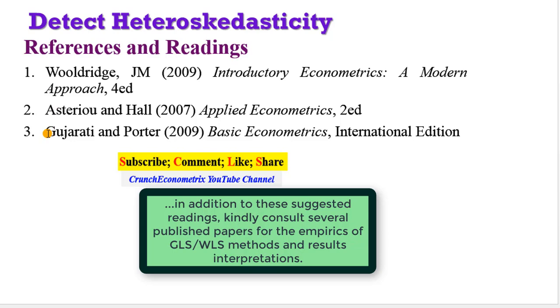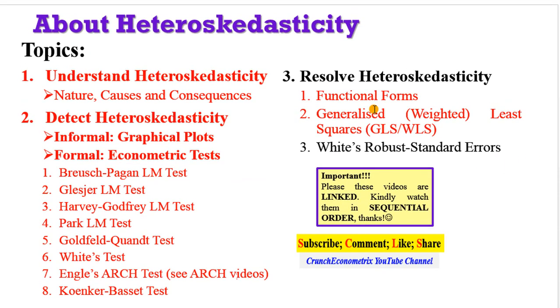please pick any of these textbooks, read, for you to know how you can interpret your results. These are my three go-to, easy-to-understand textbooks. So if you're a beginner and you are struggling with econometrics, I will encourage you to either get Wooldridge, Asteriou Hall, or Gujarati. I know there are so many textbooks out there, so many good ones. But to the best of my knowledge, these are really, really easy textbooks that any beginner can relate to it. So get any of them and read about the GLS and WLS approaches.